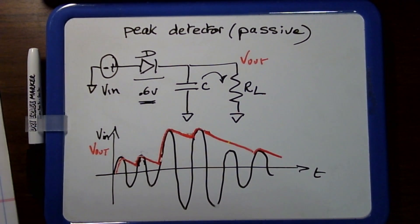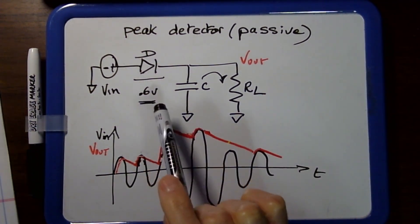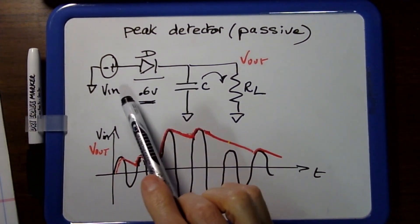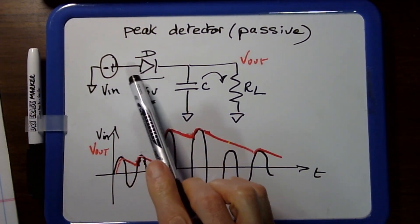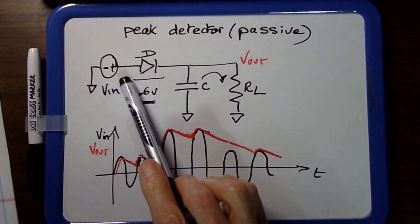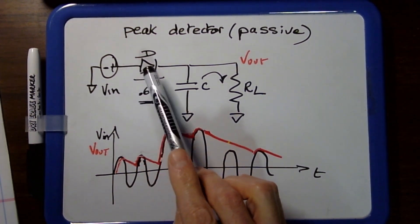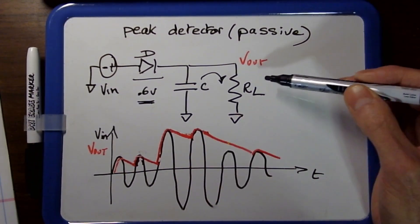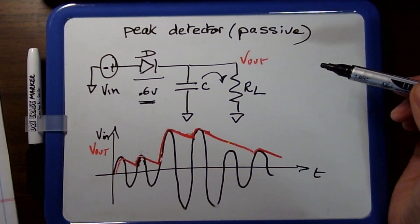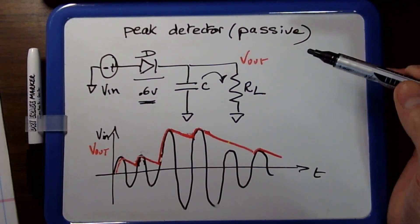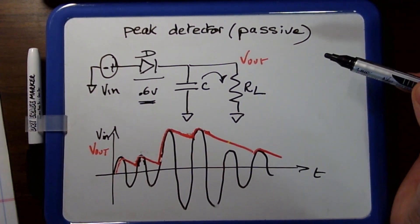There's another problem with the diode: it's like an active switch, either on or off. Whenever it turns on, you are suddenly loading the supply, which is not good. You really would like to have some kind of buffer. That's another reason why this circuit is not great, and why it's often a good idea to switch to an active peak detector.